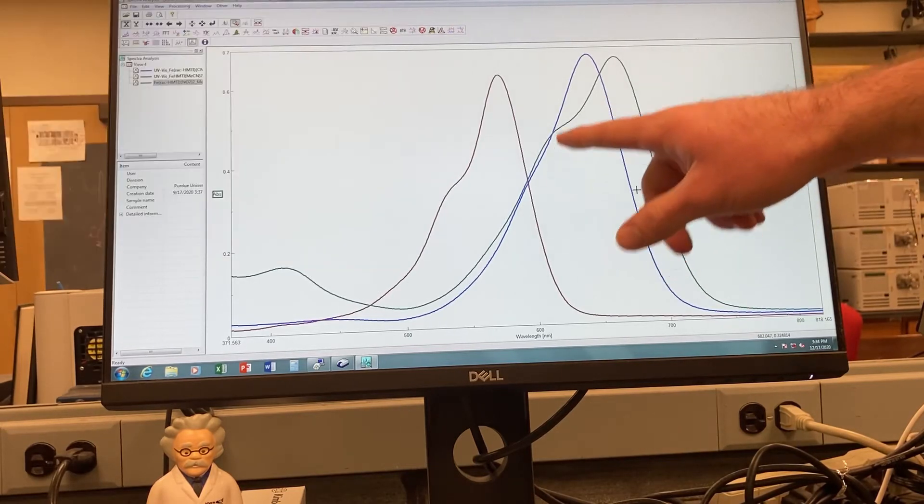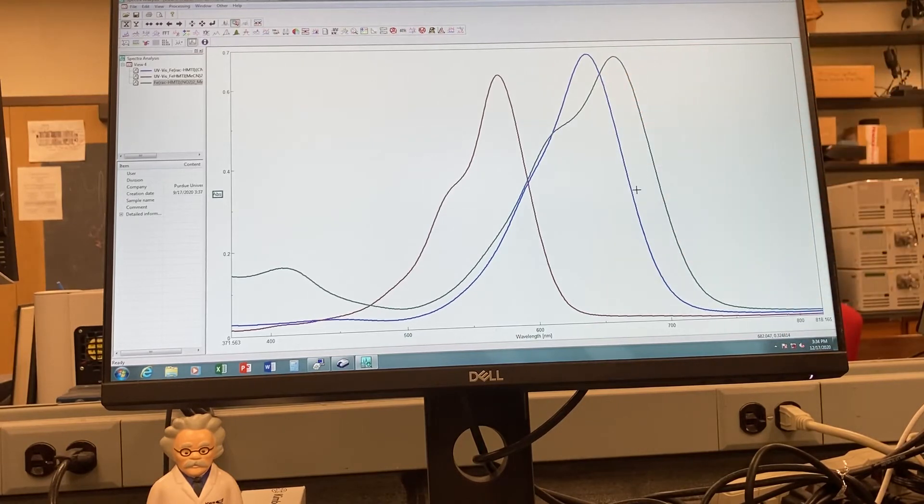Our second compound here absorbs mainly around 650 nanometers, some at 600 as well. That's absorbing basically orange light. Thus, it appears blue, the complement of orange.